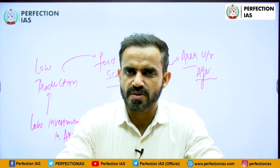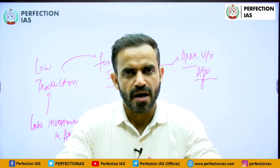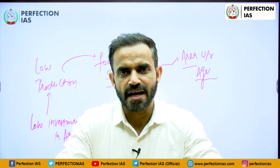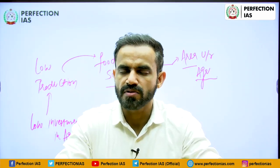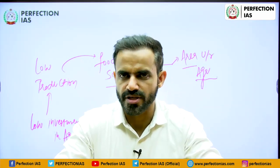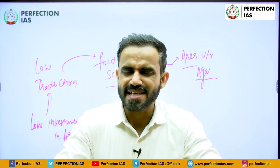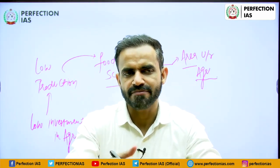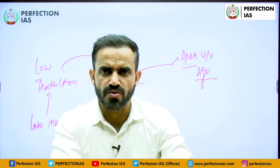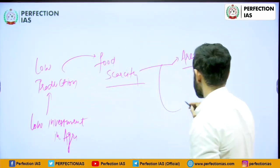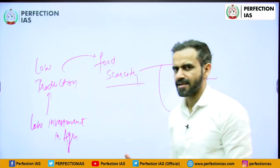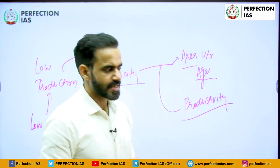This approach had two major problems. First, the area is limited and the population was increasing. Second, after independence, specifically after the 1956 policy, the government also focused on industrialization, so land was diverted from agriculture to industries. Therefore, this area-based approach was not a long-term solution, and the focus had to shift to productivity. This productivity aspect was handled through the green revolution.